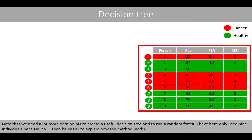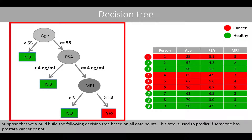Note that we need a lot more data points to create a useful decision tree and to run a random forest. I have here only used nine individuals because it will then be easier to explain how the method works. Suppose that we will build the following decision tree based on all data points. This tree is used to predict if someone has prostate cancer or not.